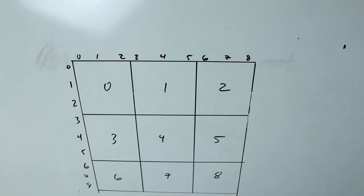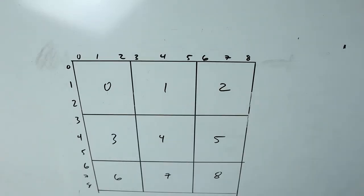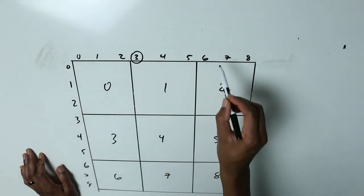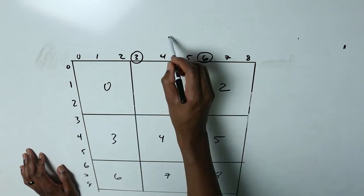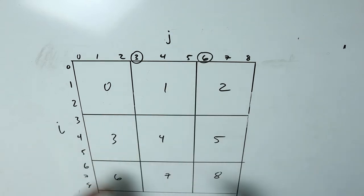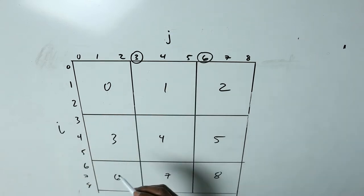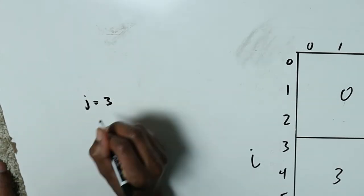Let's write a formula to get those box indices. For the top row, before going to the next box the column starts at a multiple of three — so three and six. If we do the formula j divided by three and j equals three, we'll get one.